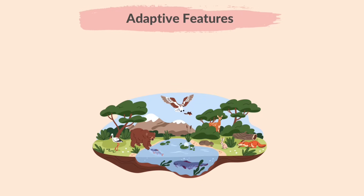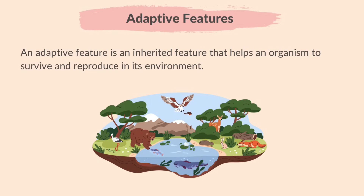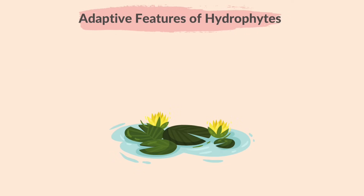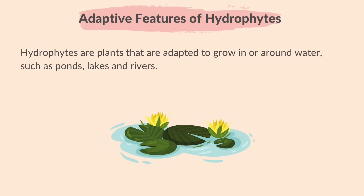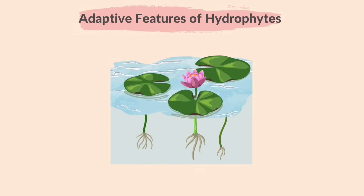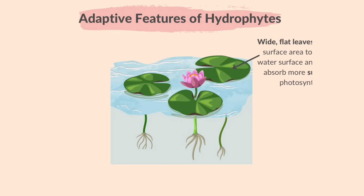Next, let's learn about adaptive features. An adaptive feature is an inherited feature that helps an organism to survive and reproduce in its environment. Let's learn about the adaptive features of hydrophytes that allow them to survive in their environment. Hydrophytes are plants that are adapted to grow in or around water, such as ponds, lakes and rivers. They have wide and flat leaves to increase their surface area, to float near the water surface and efficiently absorb more sunlight required for photosynthesis.